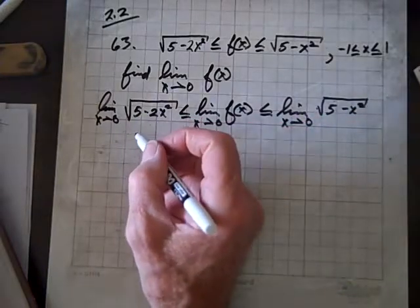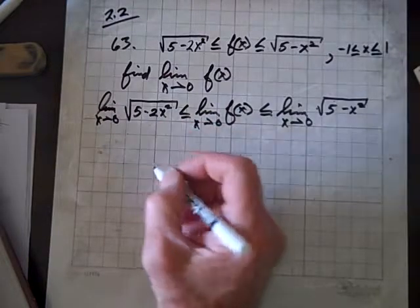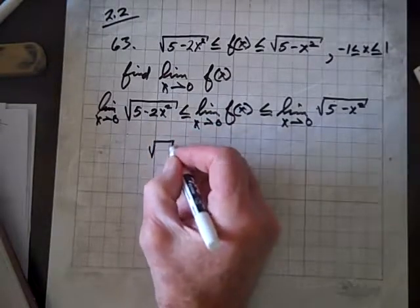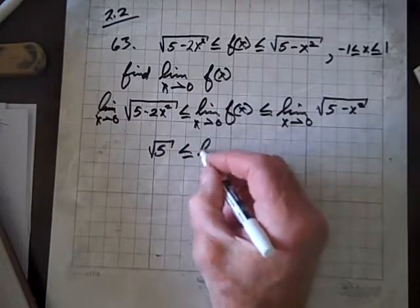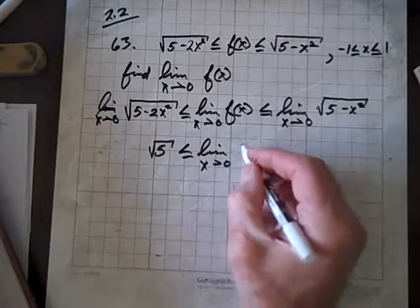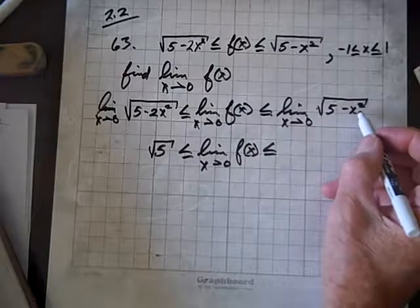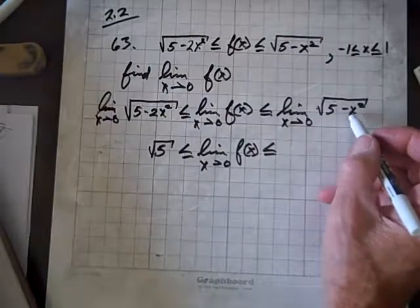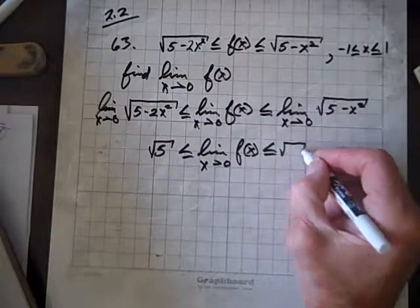Now, we can evaluate this directly just by letting x go to 0. So, that limit is simply going to be square root of 5, which is less than or equal to the limit as x goes to 0 of f of x, which is less than or equal to, again, we'll let x take on the value of 0, no harm done, and we'll just get square root of 5.